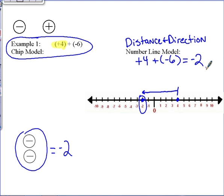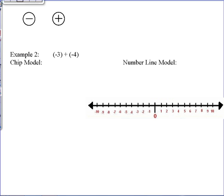Take some time, make sure you have both models copied into your Cornell notes before you go to the next example. Alright, example 2. A little bit different than example 1. In this case, we are going to take 3 negatives and add 4 negatives to it.